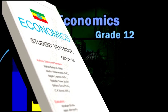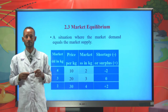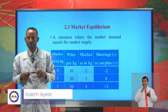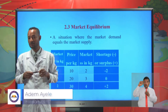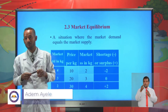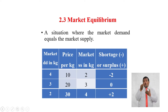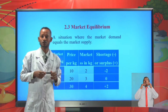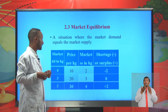Let's get started. This is an economics revision lesson for grade 12 provided by the Ministry of Education. This is the third lesson of Unit 2, which is about market equilibrium. Market equilibrium is a situation where the market demand equals the market supply.